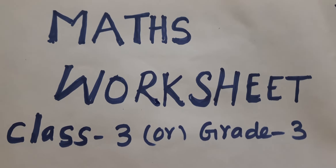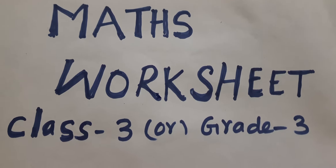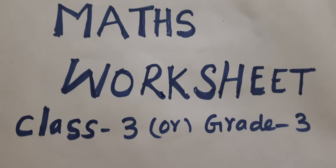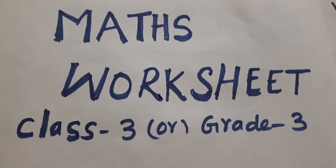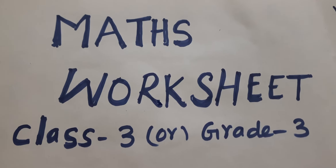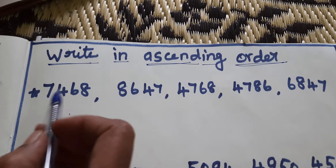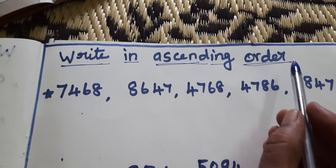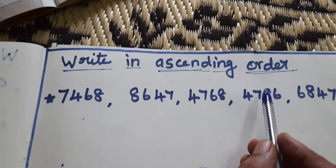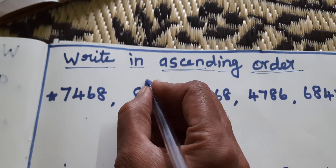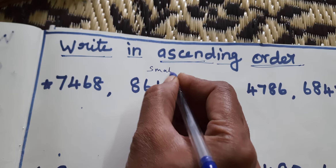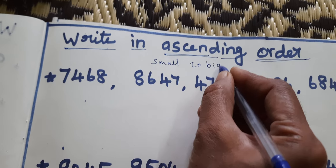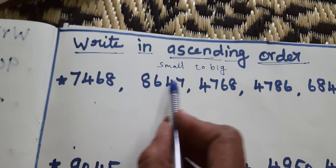Hi kids! Maths Worksheet Class 3 or Grade 3. Writing Ascending Order. Ascending Order means small to big.